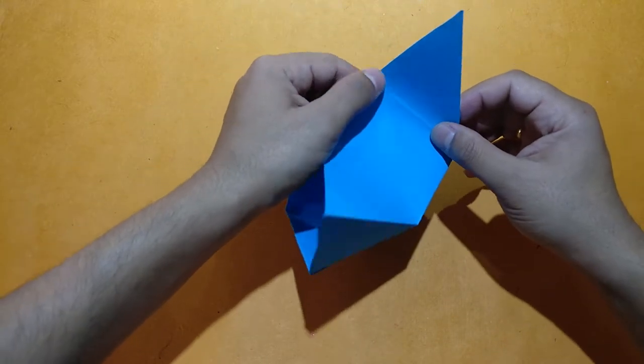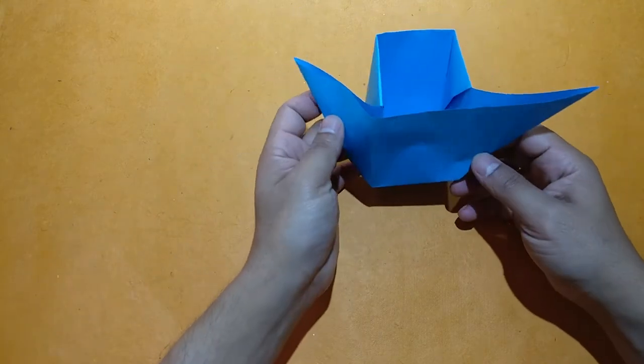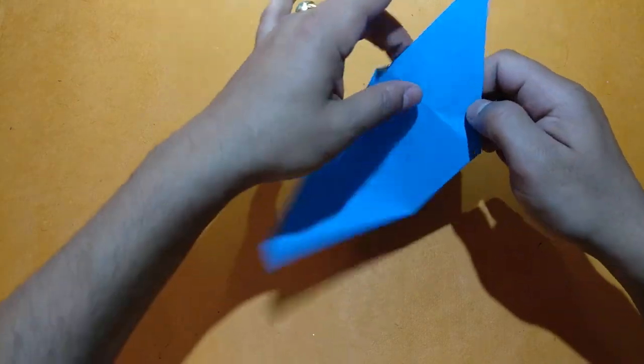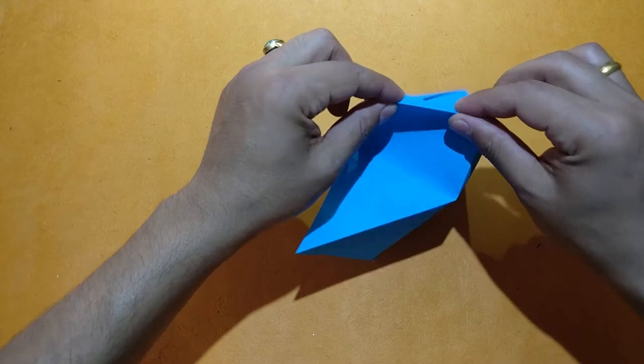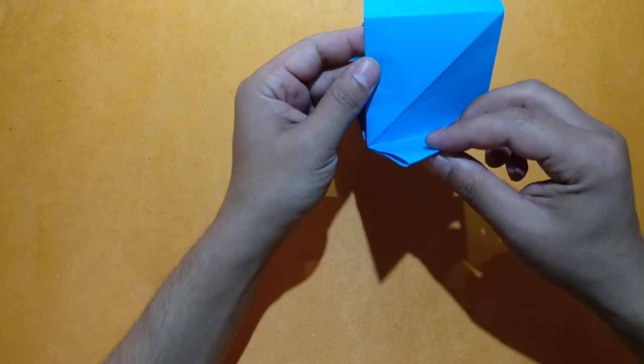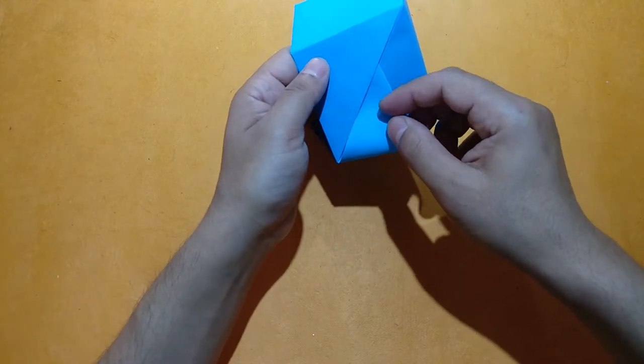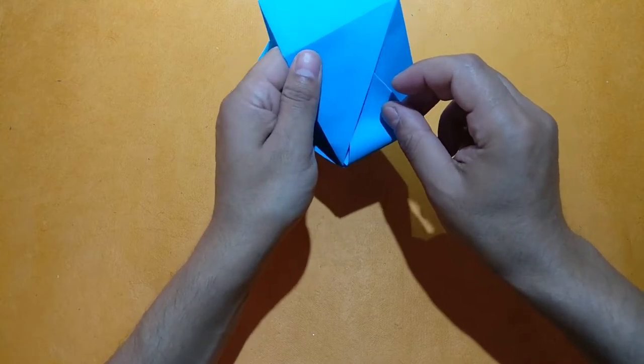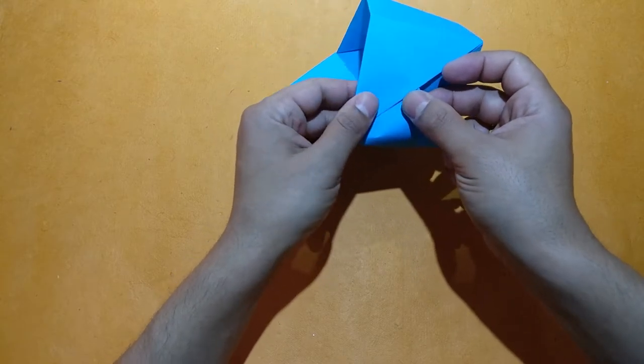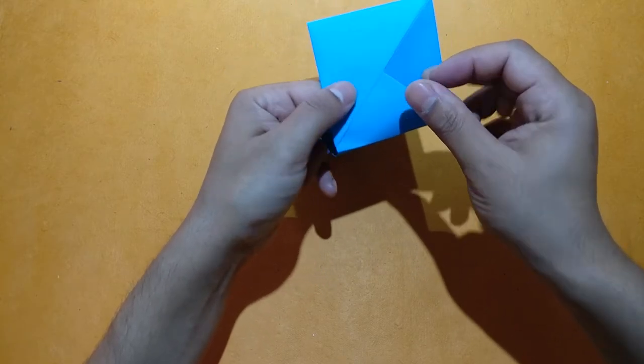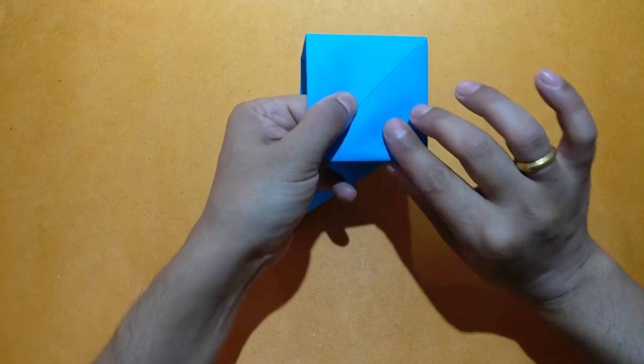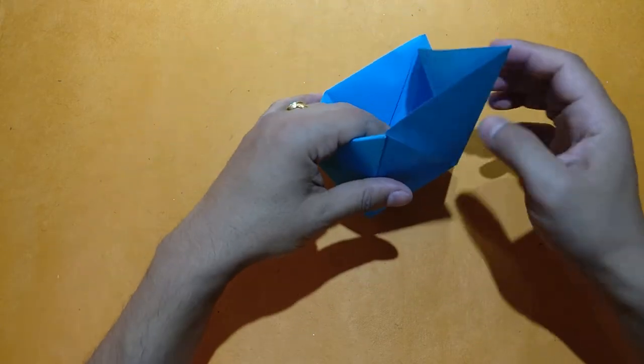You can see a triangle. Now fold this triangle. Now fold these triangles. Still we need to lock this triangle. Put this triangle into another triangle like this. Now our triangle is locked. Same thing on the other side.